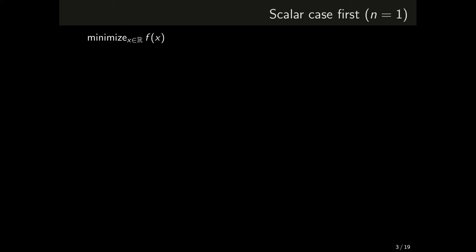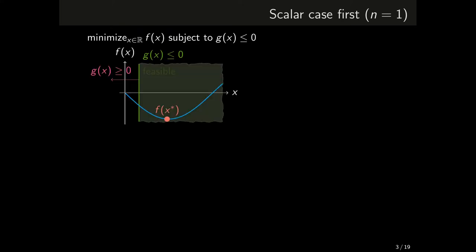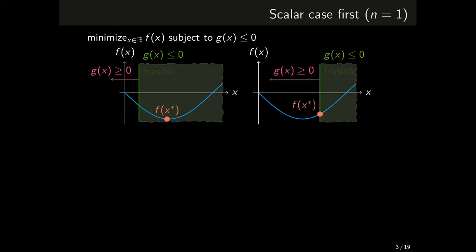Let's get started with a scalar case. We consider minimization of f of a single variable x subject to g of x smaller than or equal to zero. As usual we assume that both f and g are smooth so that we can work with derivatives. There are two possible scenarios: either the minimizer x star is well inside the feasible set, or the minimizer is on the boundary of the feasible set.